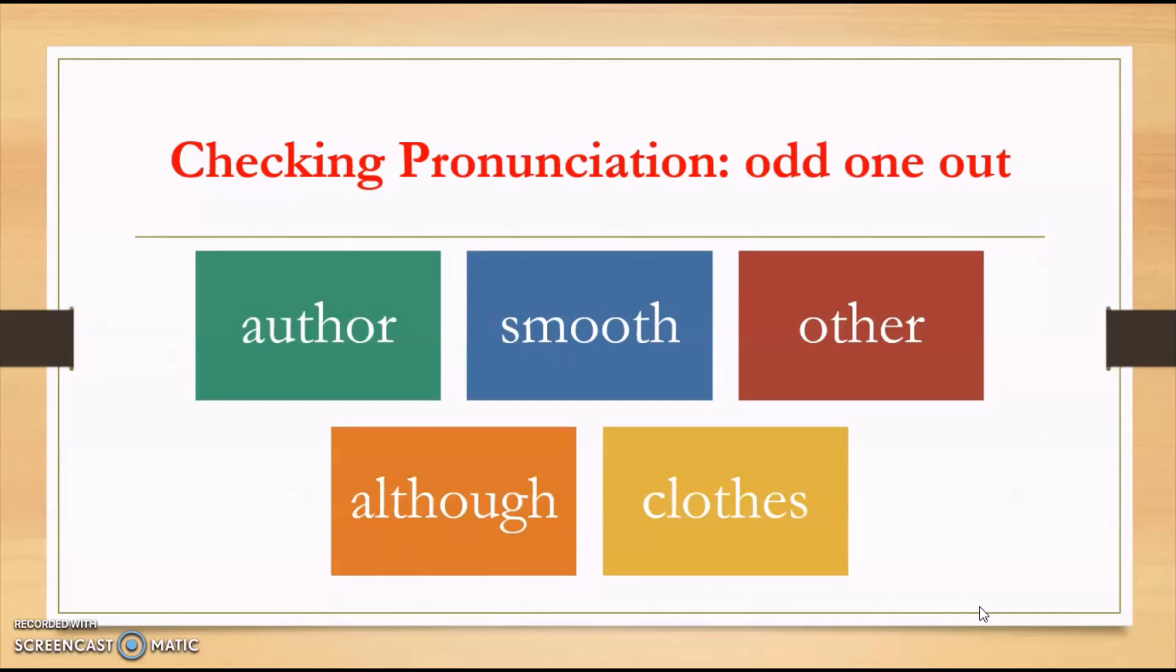First word: AUTHOR, THOR. SMOOTH, THE sound. OTHER, THE. ALTHOUGH, again THE. CLOTHES, CLOTHES, again THE. So the odd one is AUTHOR. It has a THOR sound there.